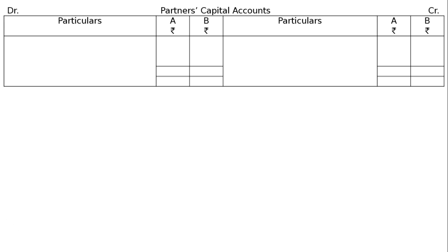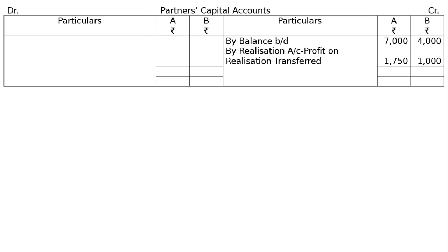Now prepare the Partners' Capital Accounts with debit and credit columns for A and B. On the credit side: by balance brought down — A rupees 7,000 and B rupees 4,000. Then by Realization Account — profit on realization transferred: A rupees 1,750 and B rupees 1,000. Total the credit side, then take it to the debit side and find the gap. The final payment to cash account: A will be paid rupees 8,750 and B will be paid rupees 5,000.